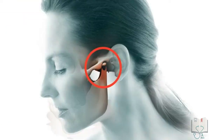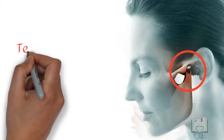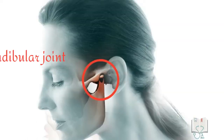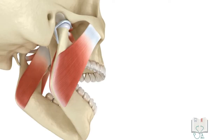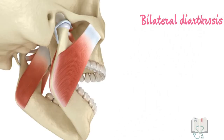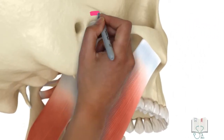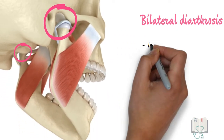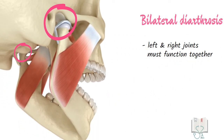The bony joint that connects the mandible to the skull is called the temporomandibular joint. Some special features to start with: the temporomandibular joint is a bilateral diarthrosis, which means that there are two joints, left and right, and both these joints must function together.